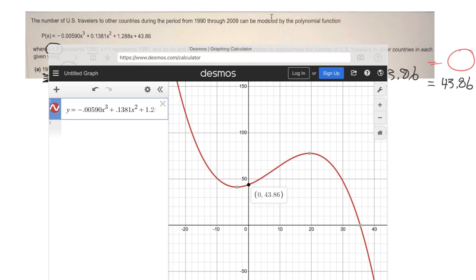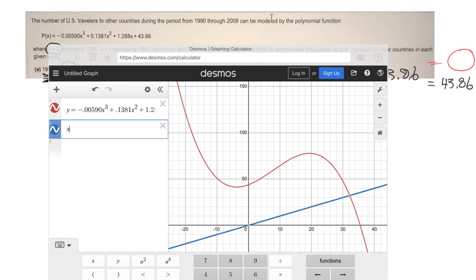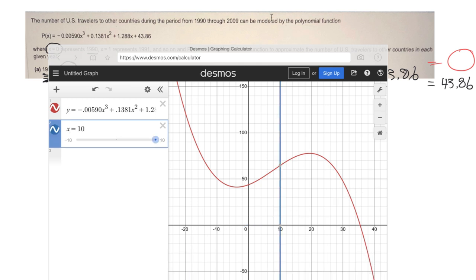If they want to know what it is after 10 years, I can just go to that point where it's equal to 10. So I can try it with my finger to figure that out. Or easier, I can just in here say, well, x equals 10. And wherever that line crosses my graph, that'll be the number of travelers.